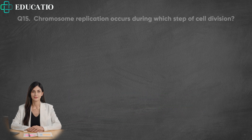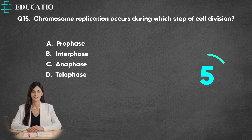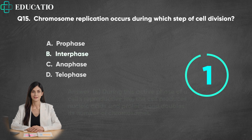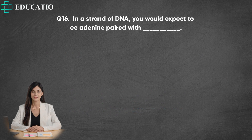Question 15. Chromosome replication occurs during which step of cell division? A. Prophase. B. Interphase. C. Anaphase. D. Telophase. Answer: B. During this active phase of a cell's reproductive life, the cell produces nucleic acids and proteins and doubles its number of chromosomes.